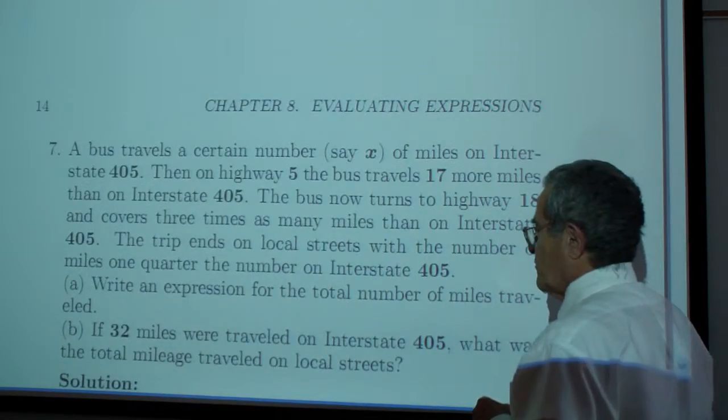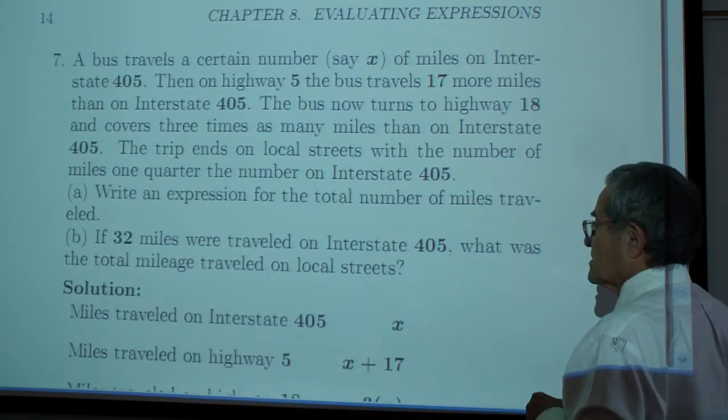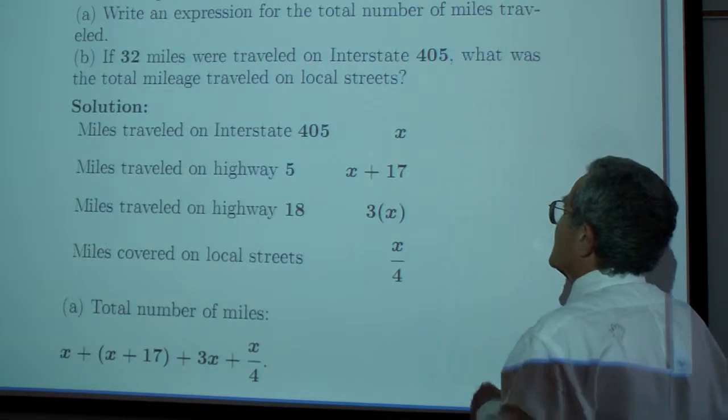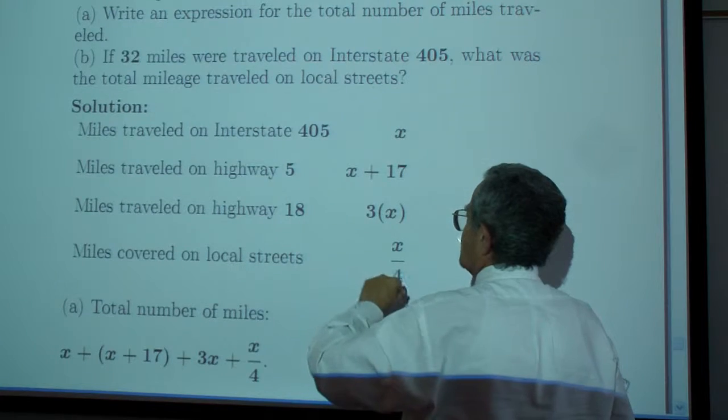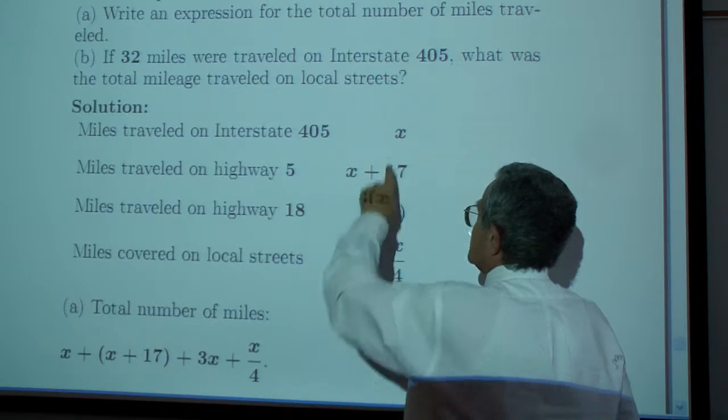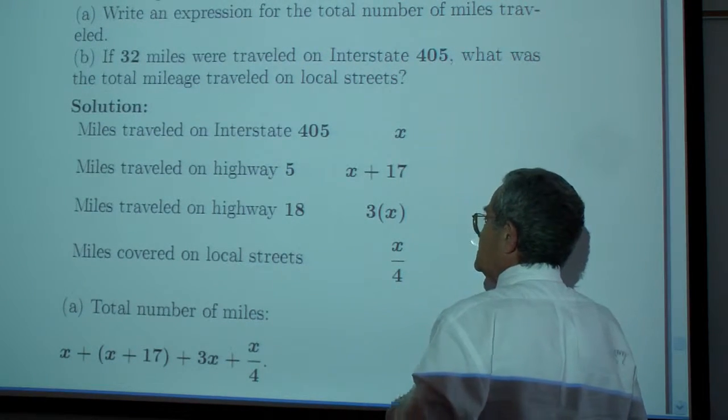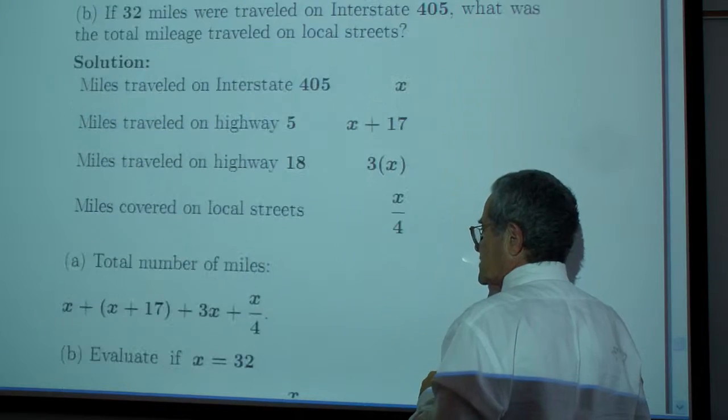Now we're at the bus problem. The bus travels x miles on Interstate 405, x plus 17 on Highway 5, three times that (3x) on Highway 18, and x over 4 on local streets.